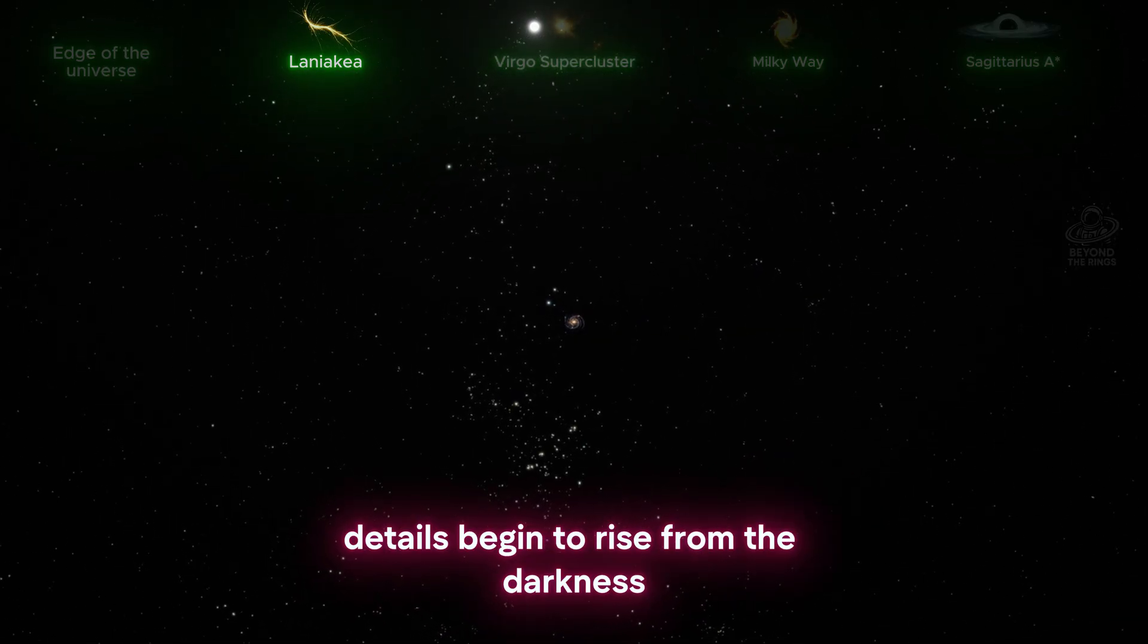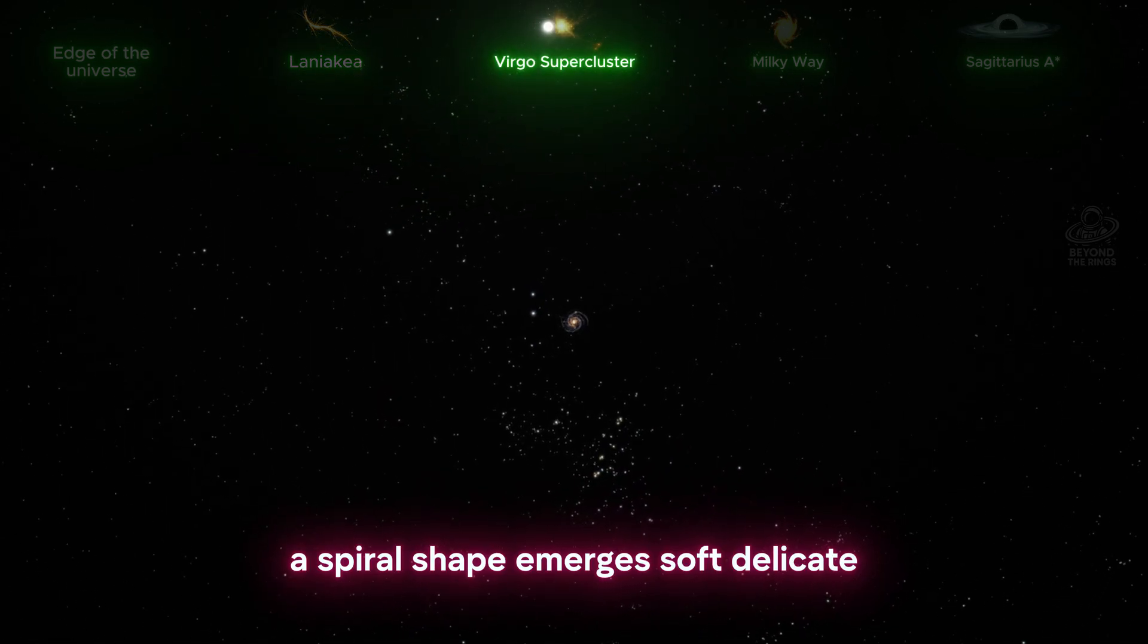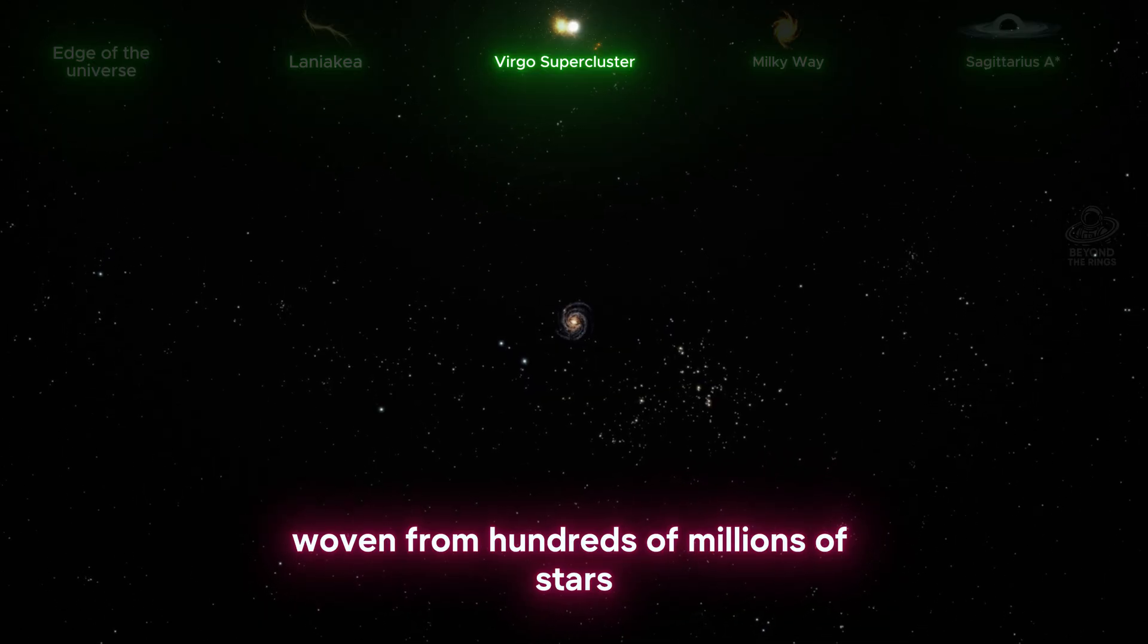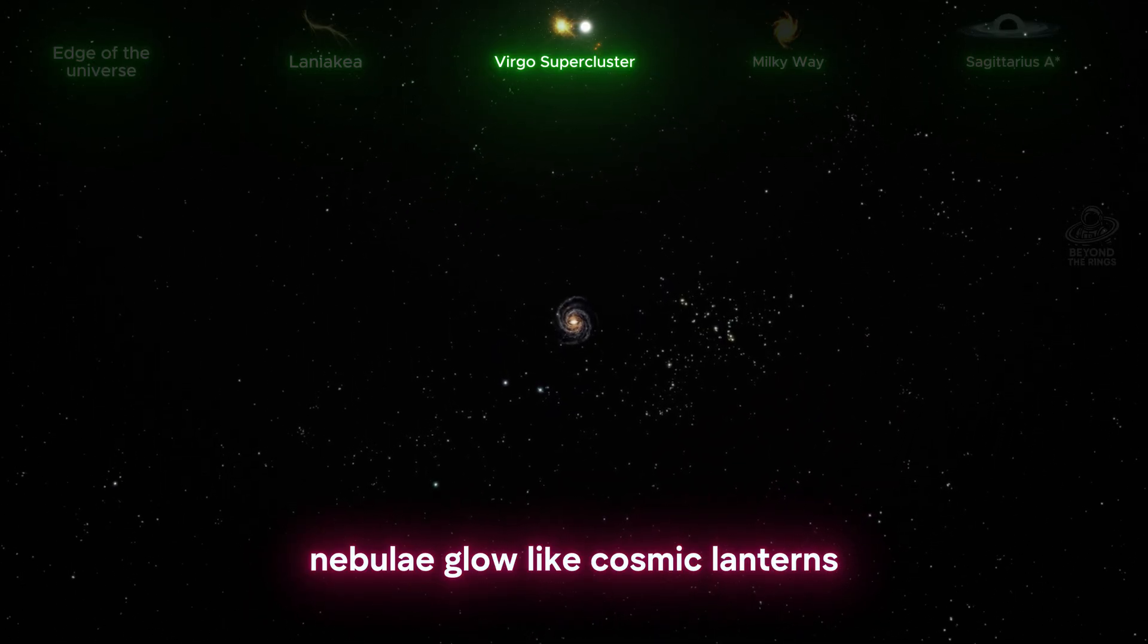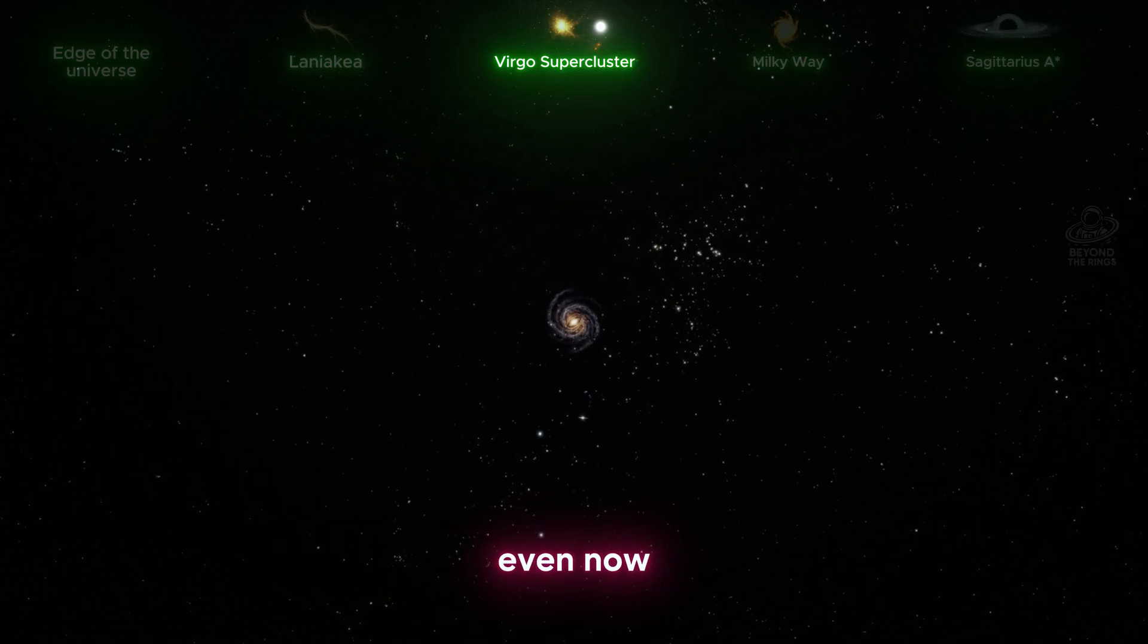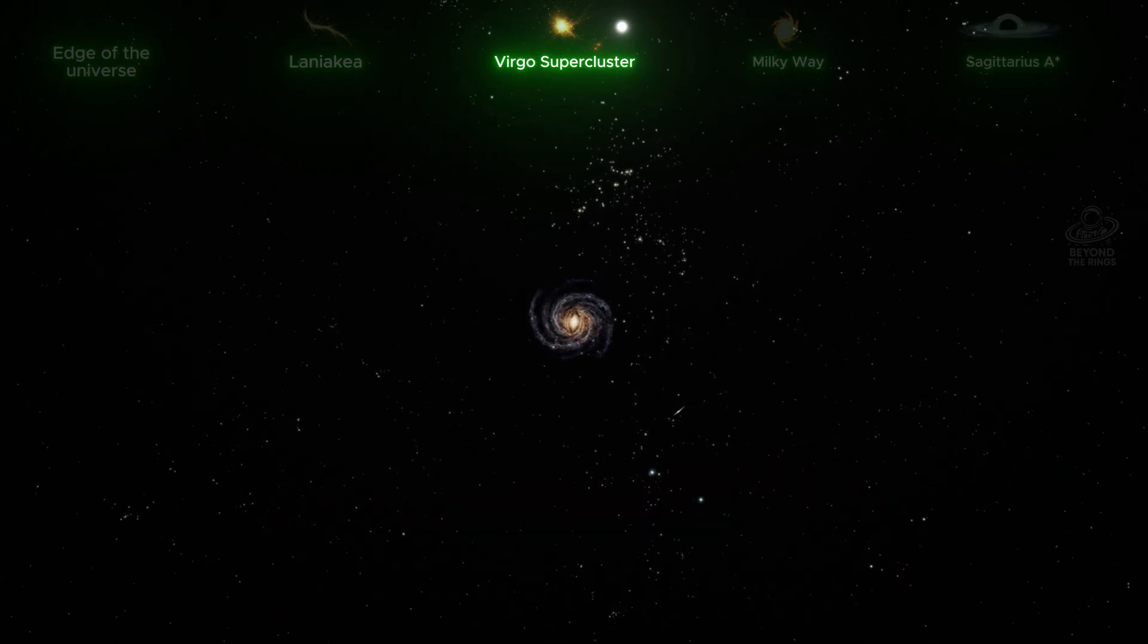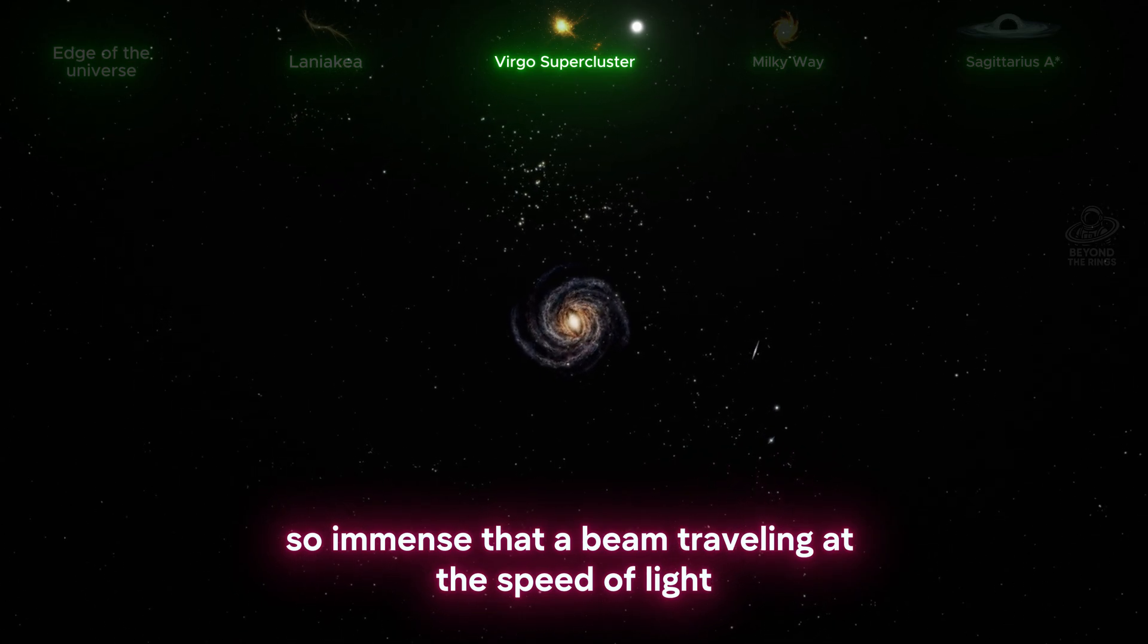As we move closer, details begin to rise from the darkness. A spiral shape emerges, soft, delicate, unbelievably vast. Each arm is a river of fire woven from hundreds of millions of stars. Nebulae glow like cosmic lanterns marking the places where new suns are being born even now. From this distance, the entire Milky Way fits in the palm of our cosmic hand. But in truth, it is a kingdom of light so immense that a beam traveling at the speed of light would take 100,000 years just to cross it.